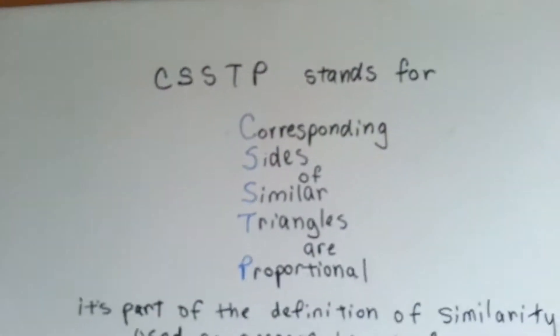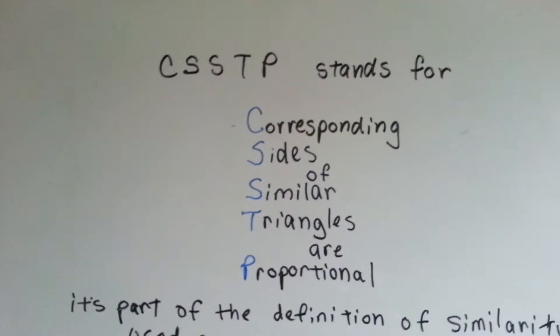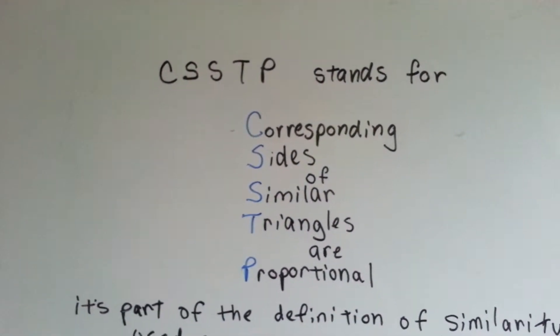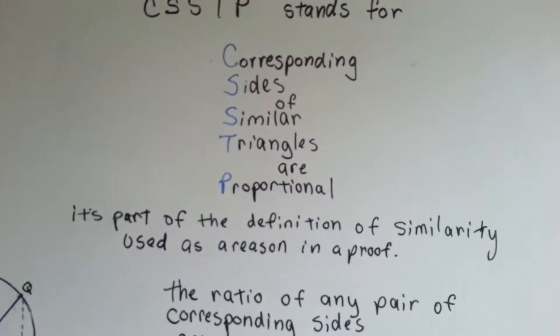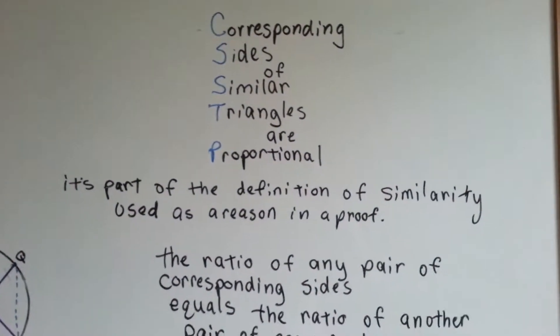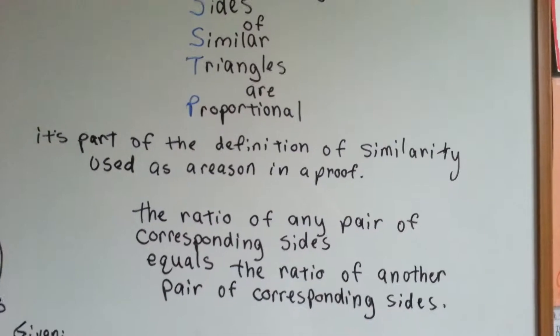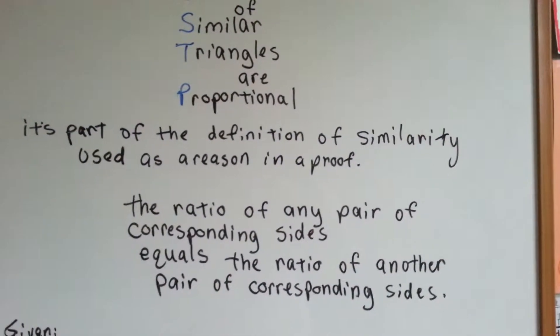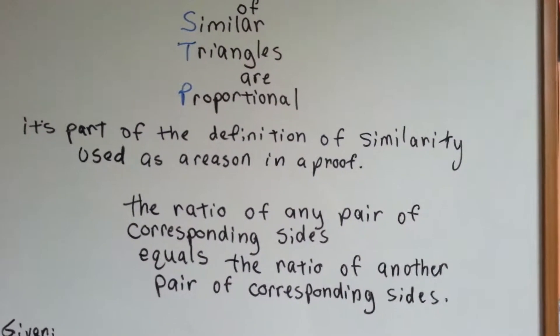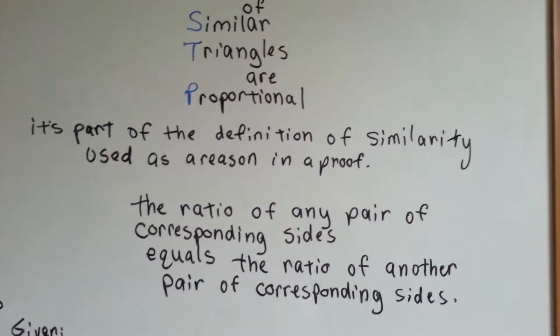Well, it stands for corresponding sides of similar triangles are proportional. It's part of the definition of similarity, and it's used as a reason in a proof. The ratio of any pair of corresponding sides equals the ratio of another pair of corresponding sides.